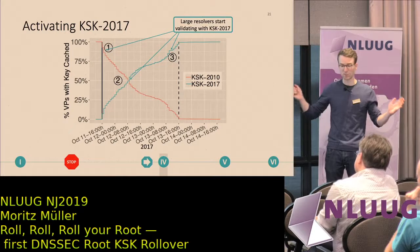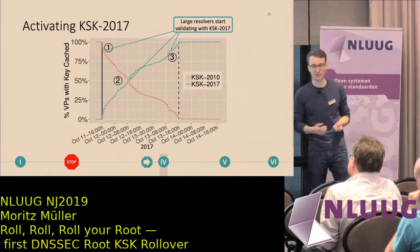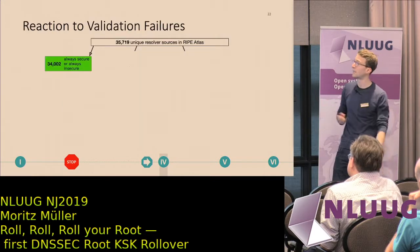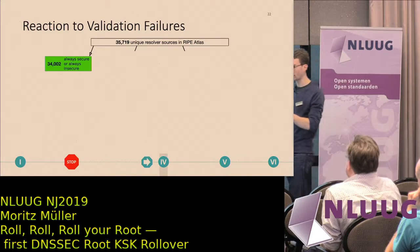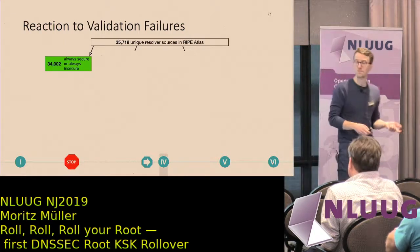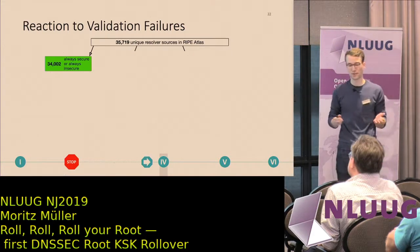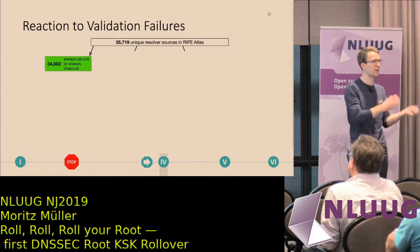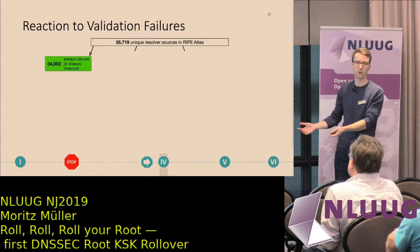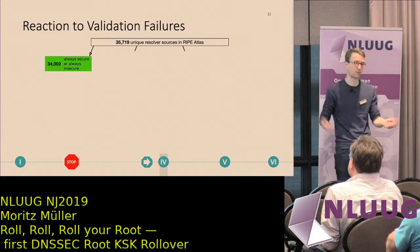After roughly eight hours, 50% of the measured internet population would notice an impact. We then looked at whether there was measurable impact on the client side, checking whether resolvers were validating before the rollover and stopped after, or changed state. The good news is that 34,000 of the monitored resolvers did not run into any troubles — they kept validating before and after, or didn't do DNSSEC validation at all before and didn't turn it on after.